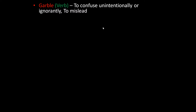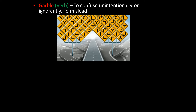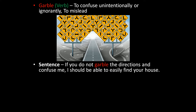The next word is garble. Garble is a verb. It means to confuse unintentionally or ignorantly, to mislead. The photo shows different directions, so if you travel across this path you will get confused by looking at so many directions — that is, you will get garbled. The sentence is: if you do not garble the directions and confuse me, I should be able to easily find your house.